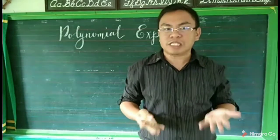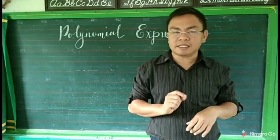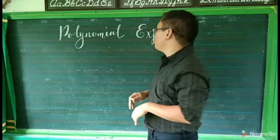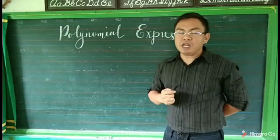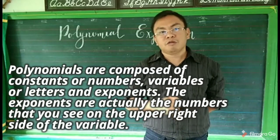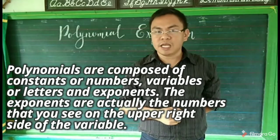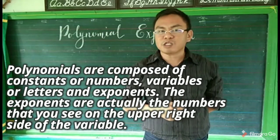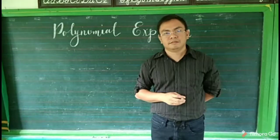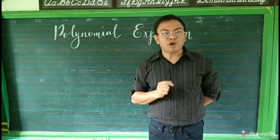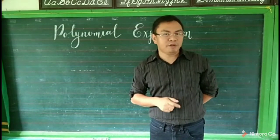But before we proceed to polynomial functions, we have to understand first what a polynomial is. We'll be talking first about polynomial expressions or polynomials. Polynomials are composed of constants or numbers, variables or letters, and exponents. Exponents are the numbers that you see on the upper right side of the variable. The combination of constants, variables, and exponents are what we call terms.